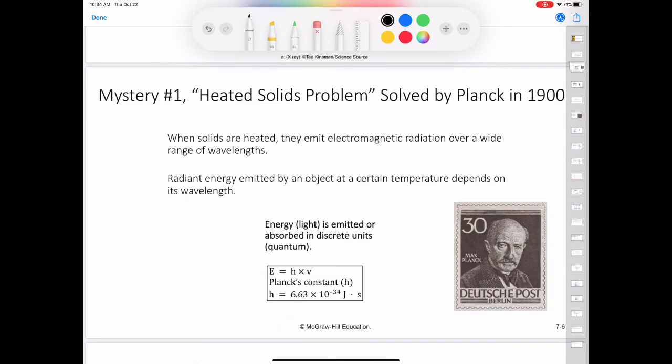When solids are heated, they emit electromagnetic radiation over a wide range of wavelengths. The dull red glow of an electric heater and the bright white light of a tungsten light bulb are examples of radiation from heated solids. Measurements taken in the latter part of the 19th century show that the amount of radiant energy emitted by an object at a certain temperature depends on its wavelength. Attempts to account for this dependence in terms of established wave theory and thermodynamic laws were only partially successful. One theory explained short wavelength dependence but failed to account for longer wavelengths. Another theory accounted for the longer wavelengths but failed for short wavelengths. It seemed that something fundamental was missing from the classical laws of physics.